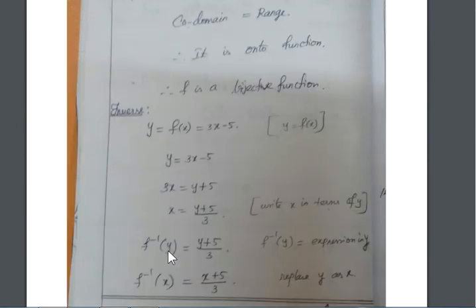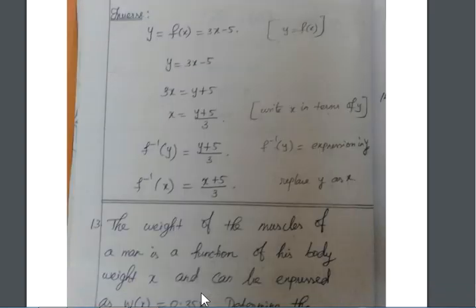Inverse function, already you know. There are 4 steps. First, we calculate y is equal to f(x) is equal to 3x minus 5 is the question. And then you find out the value of x. So, 3x equal to y plus 5. x is equal to (y+5)/3. Write x in terms of y. This is the second step. Next, we will change the x as f inverse of y. Expression in y is all wrong. f inverse of y. And then replace y by x. So, f inverse of x is equal to (x+5)/3. This is the value of the inverse function.